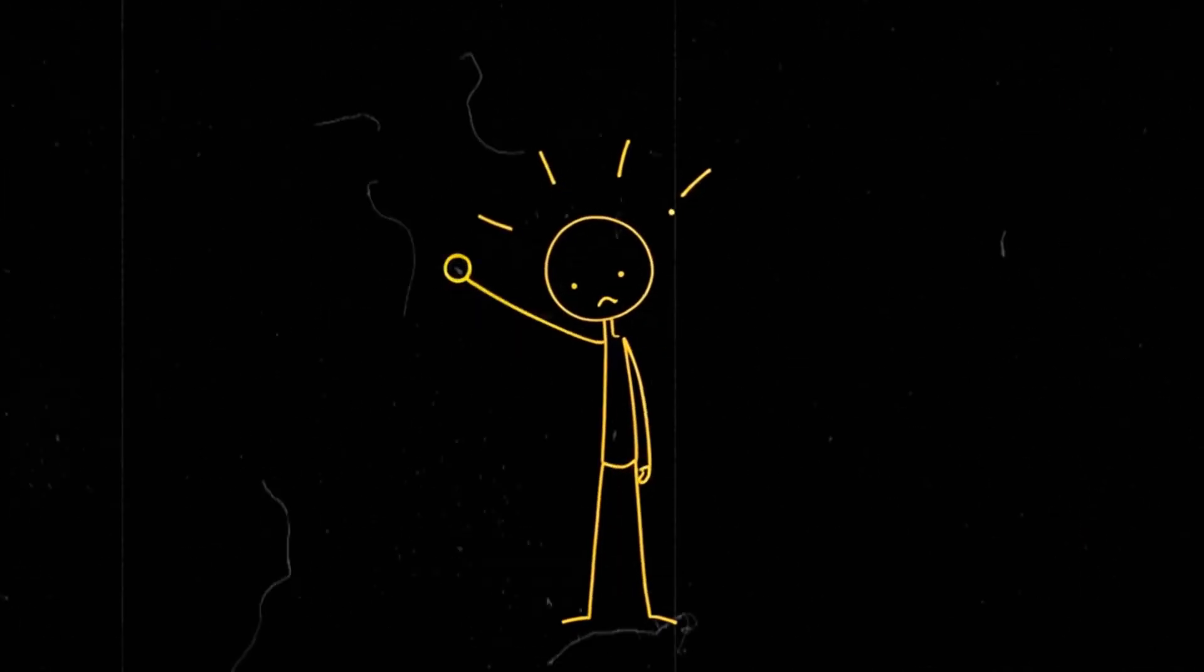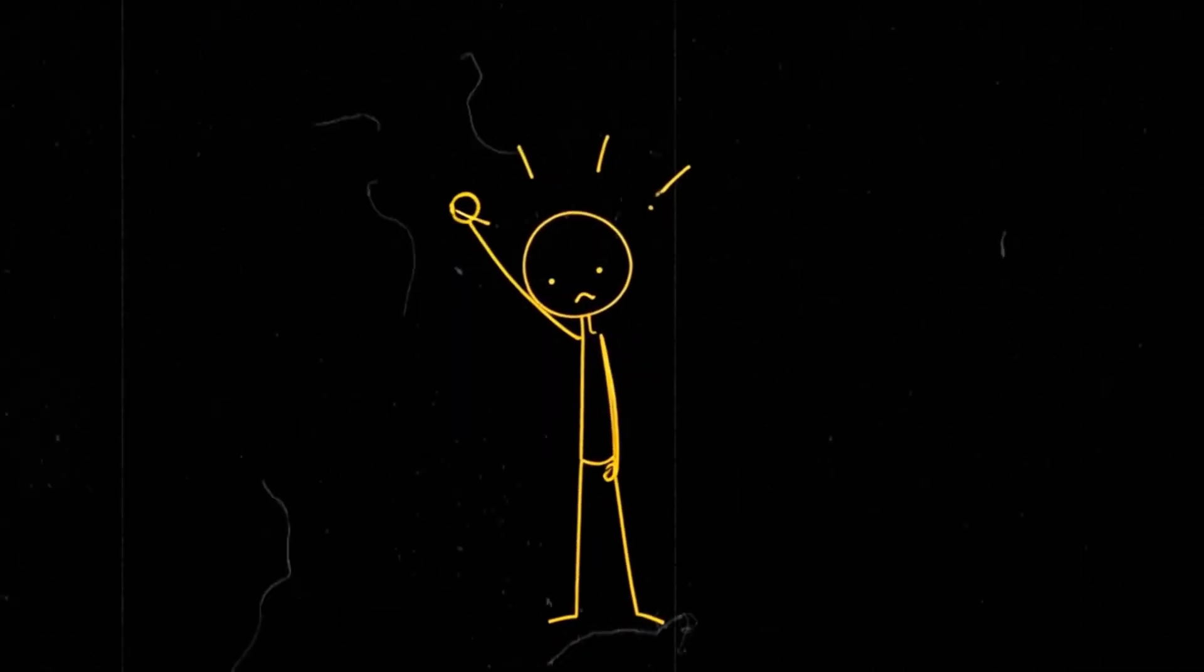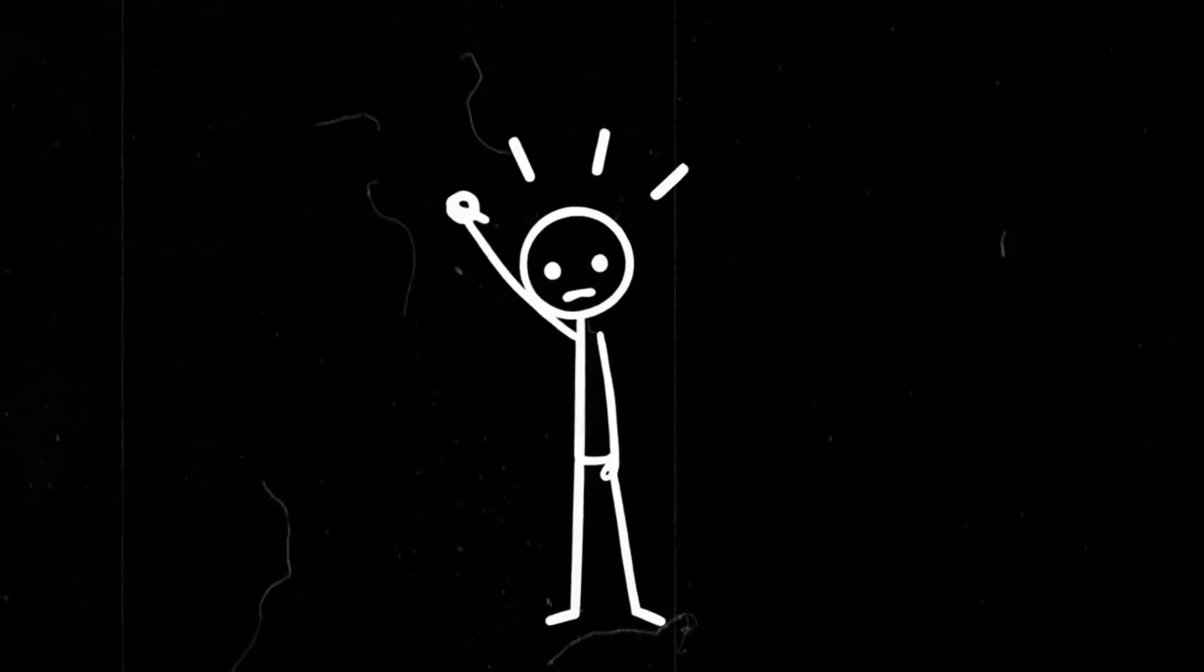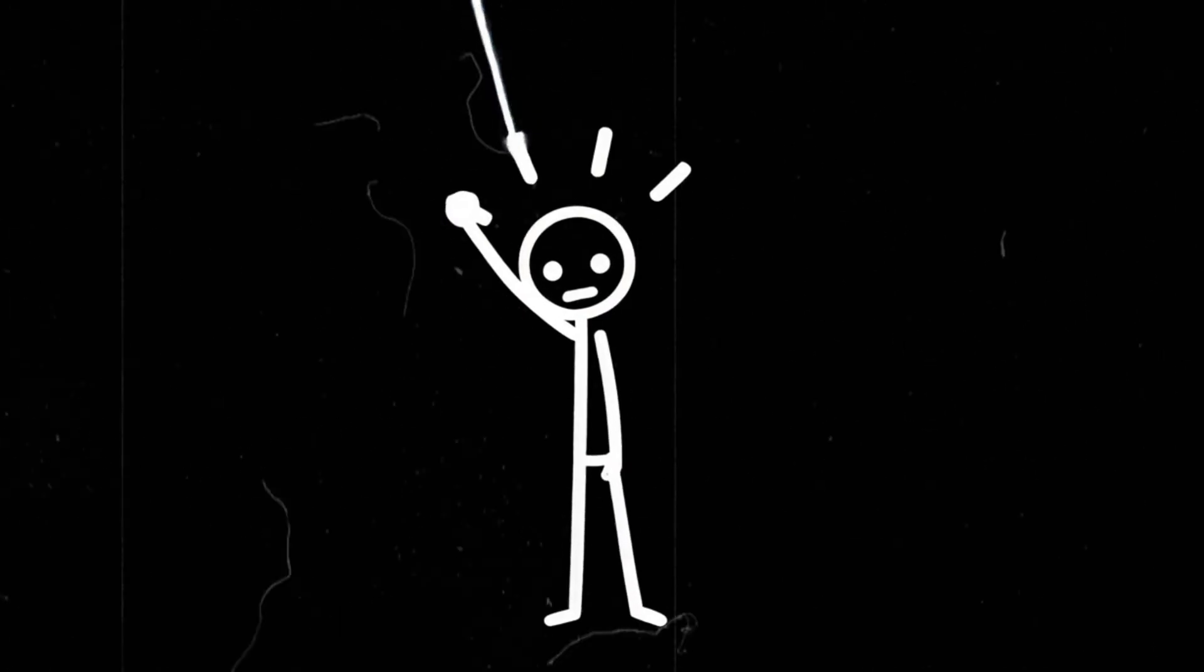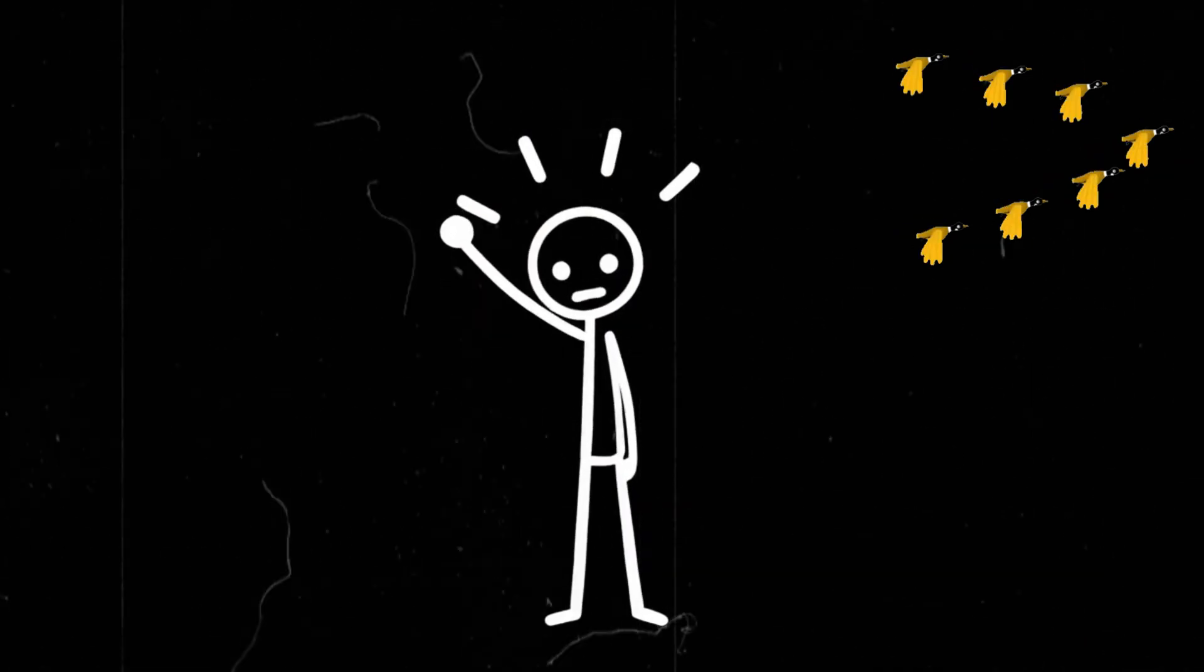So, after all that, what's the final answer? If every human jumped at the same time, Earth wouldn't notice. We wouldn't shift the planet, break anything, or trigger a doomsday scenario. The biggest impact? A lot of confused birds and a weird viral video.